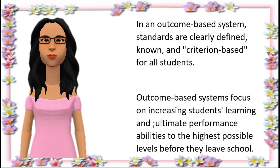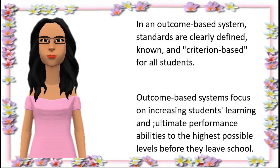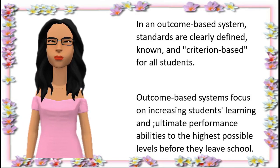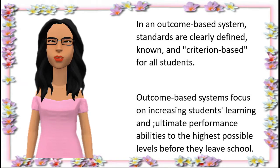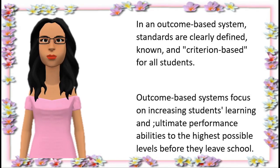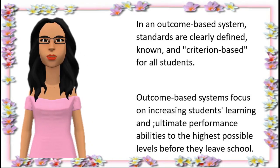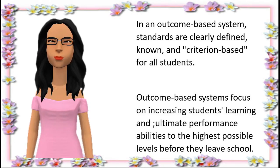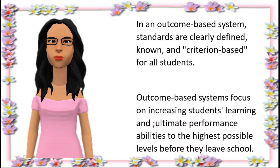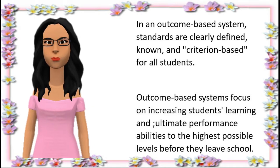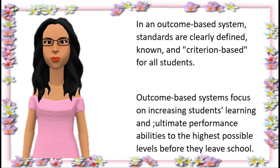Three: in an outcomes-based system, standards are clearly defined, known, and criterion-based for all students. As in karate, for example, all students potentially are eligible to reach and receive full credit for achieving any performance standard in the system — there are no quotas on who can be successful or what standards can be pursued. In contrast, the traditional system operates around a comparative and competitive approach to standards linked to a predetermined curve or quota. Only some students are destined to do well, and only some get access to the most challenging areas of the curriculum. This process of sorting and selecting begins very early in the school years and evolves into an inflexible system of curriculum trapping.